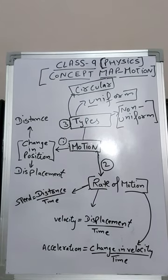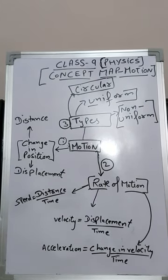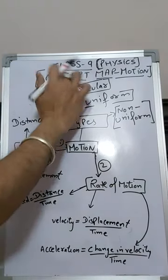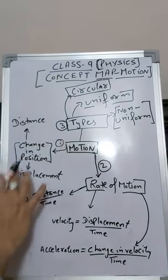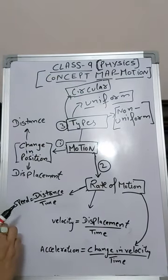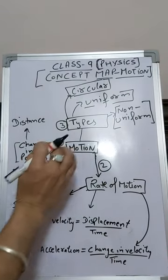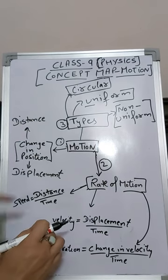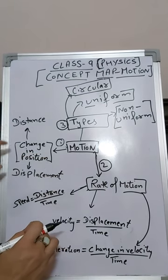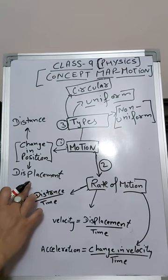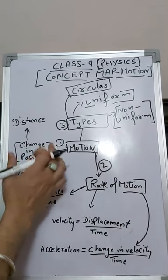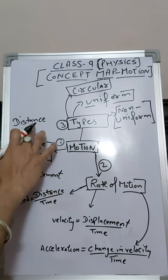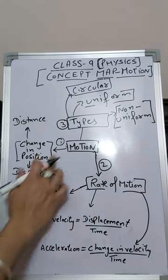Welcome students. Today we will discuss the chapter Motion. This chapter is for class 9th and this is the concept map for the chapter Motion. We have divided the Motion chapter into different subparts. The first part covers distance and displacement — motion is change in position, and further change in position leads to distance and displacement.